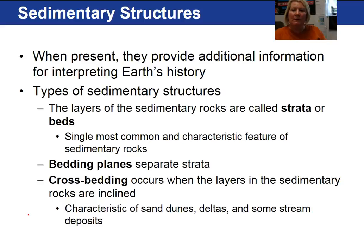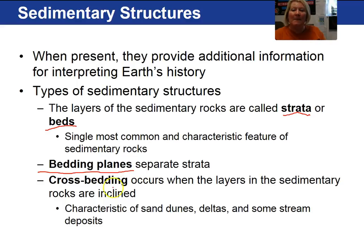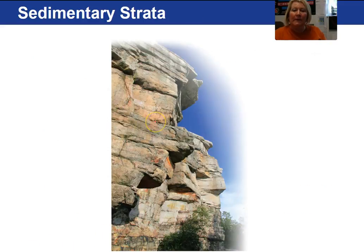Additional information with regard to Earth's history includes the study of sedimentary structures. The first are strata, which simply means a rock layer or a bed of rock. Bedding planes are the breaks between the strata. Cross bedding is another sedimentary structure where the sedimentary layers are inclined. We find cross bedding in sand dunes, deltas, and some stream deposits.